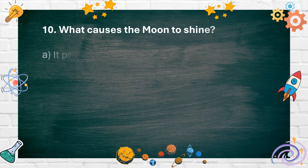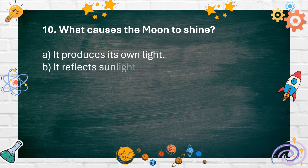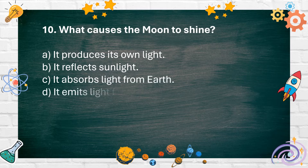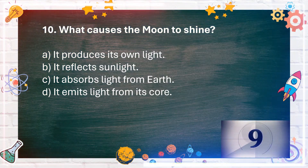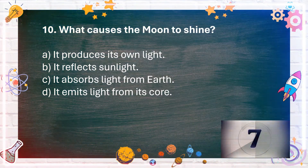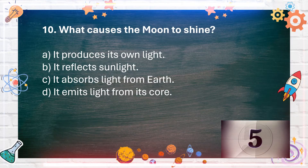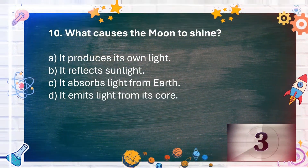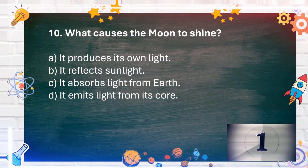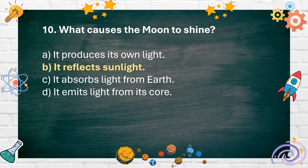Number 10. What causes the moon to shine? A. It produces its own light. B. It reflects sunlight. C. It absorbs light from Earth. D. It emits light from its core. The answer is B. It reflects sunlight.